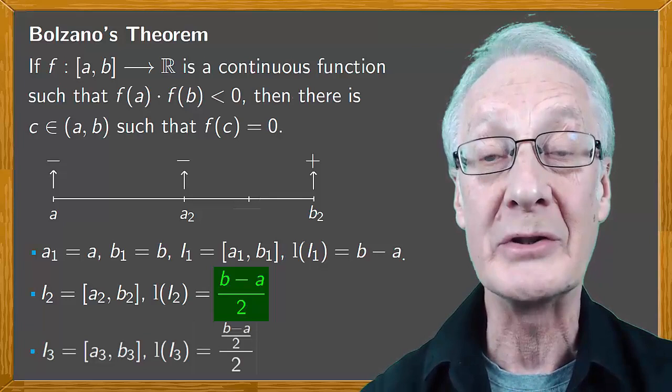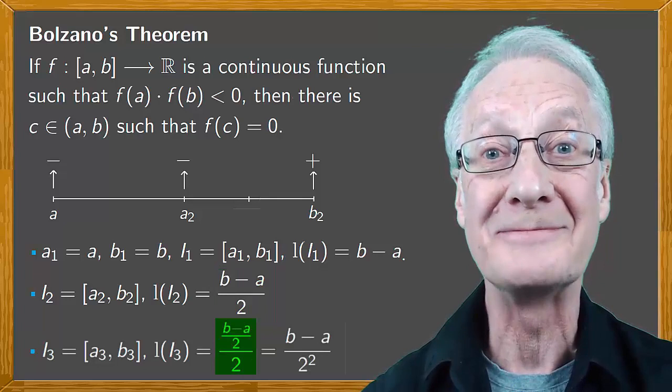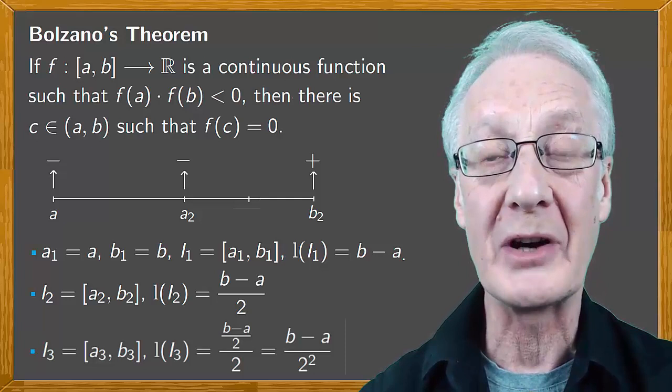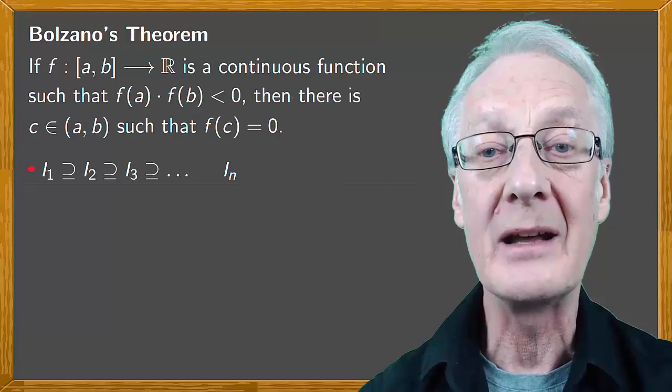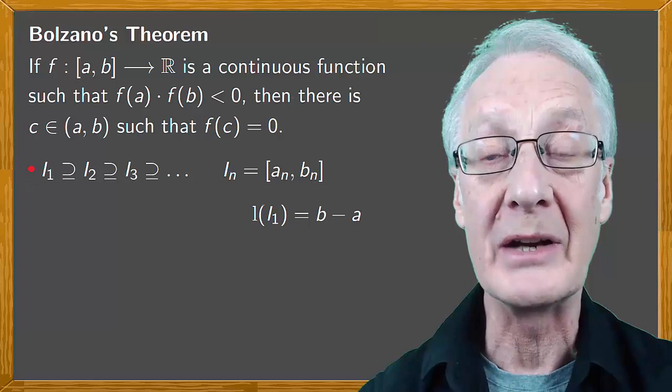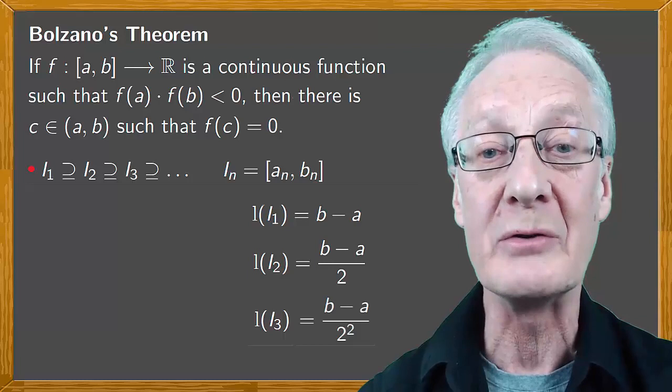We can repeat this procedure again and again until we find the desired c value or indefinitely, obtaining a succession of closed intervals I₁, I₂, I₃ and so on, the interval Iₙ with extremes aₙ and bₙ. The length of the first interval is b - a, the second (b - a)/2, the third (b - a)/2² and so on, all the way up to the nth interval which will measure (b - a)/2ⁿ.